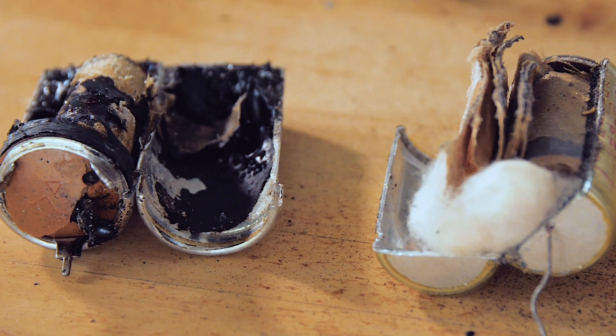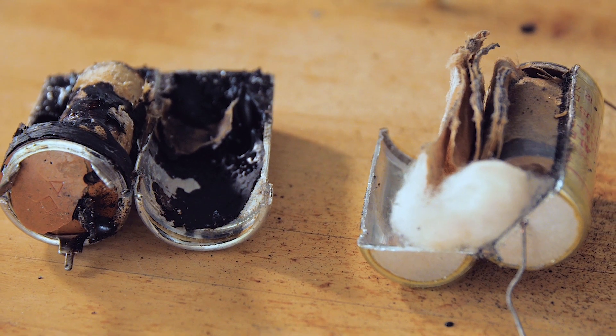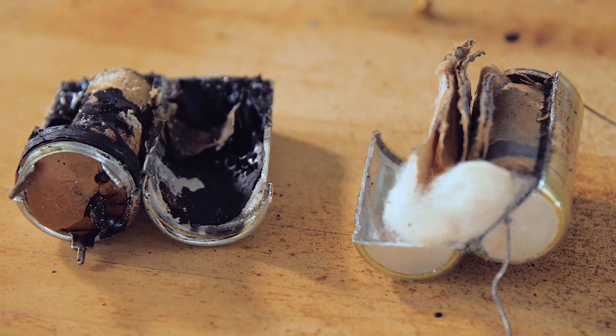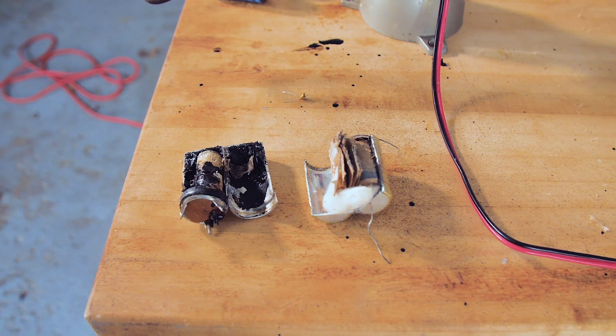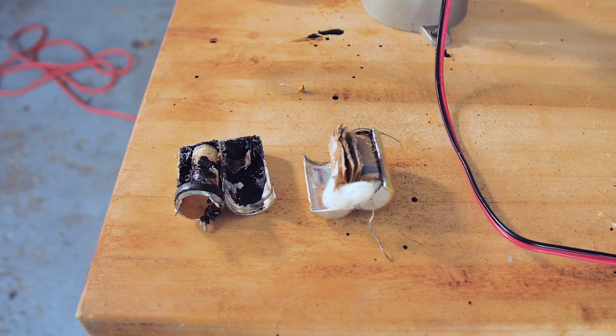We've torn down the two types of aluminum electrolytics we destroyed. Here you can see the foil layers and the paper separator of the wound gel electrolyte cap. The electrolyte of course has boiled away.